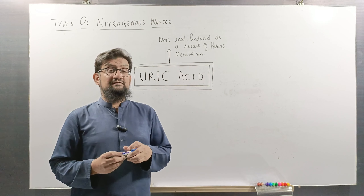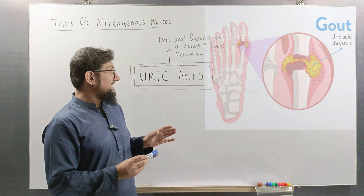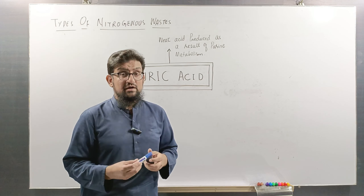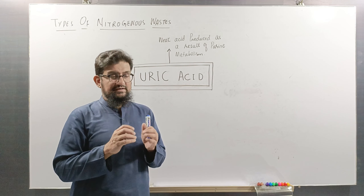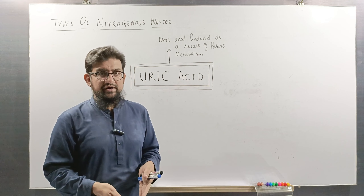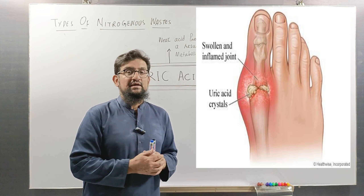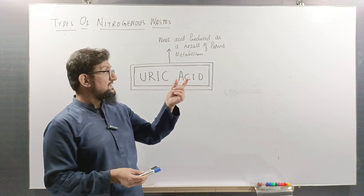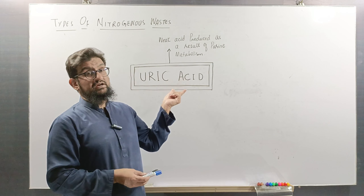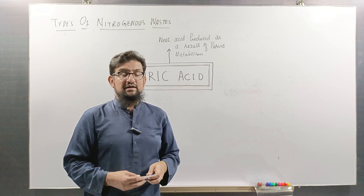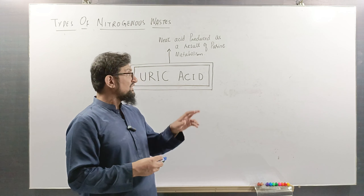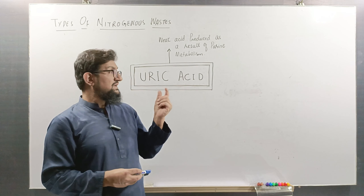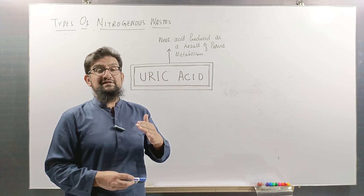If you observe patients with gout who have gouty arthritis — gout is produced as a result of increased accumulation of uric acid in our body — that increased amount of uric acid starts depositing in our small joints, especially the joints of our toes, and it is a seriously painful condition. Physicians recommend these patients to decrease their purine intake and suggest medications that reduce their uric acid levels in the body.